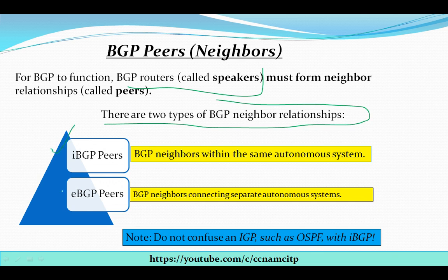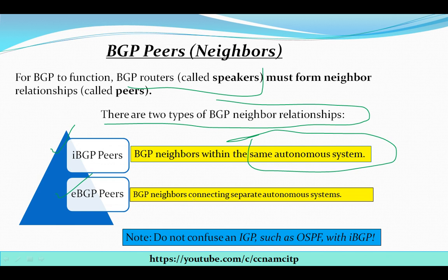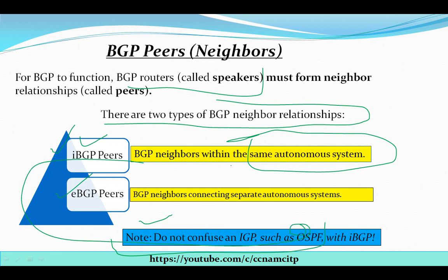BGP creates two types of neighbor relationships: the first is IBGP, and the second is EBGP. IBGP creates a relationship within the same autonomous system, while EBGP creates a relationship with a separate autonomous system. You should not confuse IBGP with IGP protocols such as OSPF — they are different things.